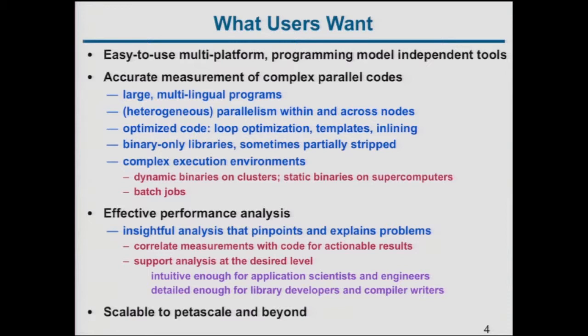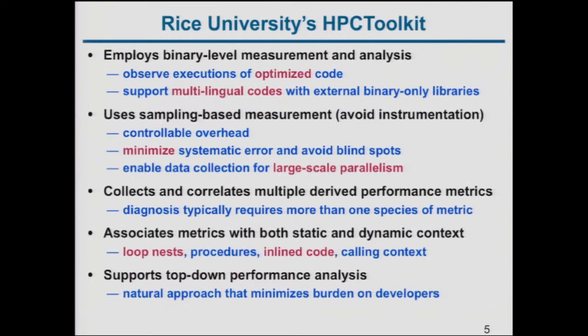You need tools that provide insightful analysis, pinpoint and explain problems, and correlate performance measurements with the code. For scientific codes, that means showing measurements at the loop level, since that's where you can make changes — at the level of loops, procedures, and call chains. The tools also have to scale to large machines; one approach is collecting data for a fraction of processes rather than all of them.